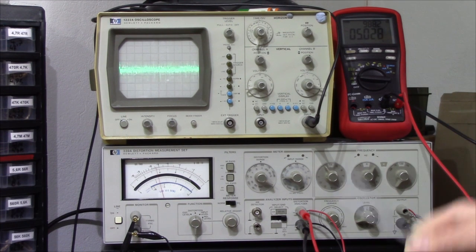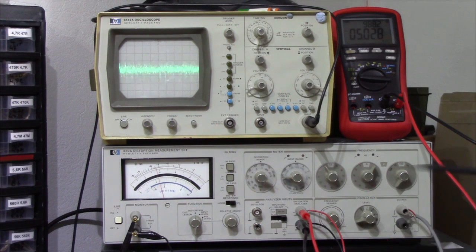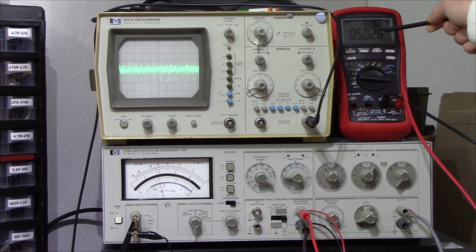Also running from the output of the amplifier is my multimeter, hooked up to measure AC volts and the frequency. And from the monitor output of the distortion analyzer, we have an oscilloscope. This will show us the distortion waveform. In essence, this will show what the amplifier is putting out that isn't being put into it. Car speakers are generally 4 ohms, and we'll be testing those as well.